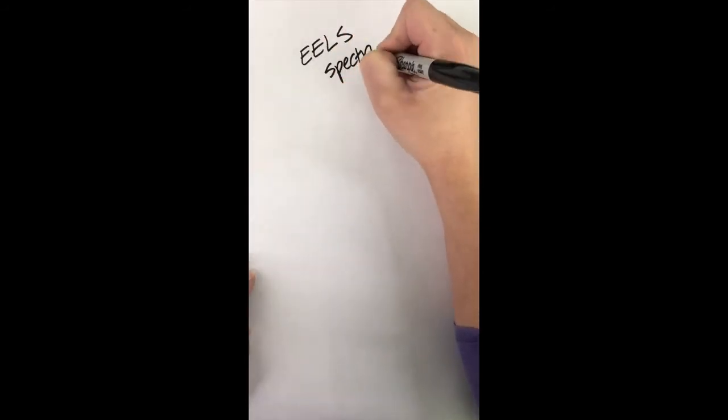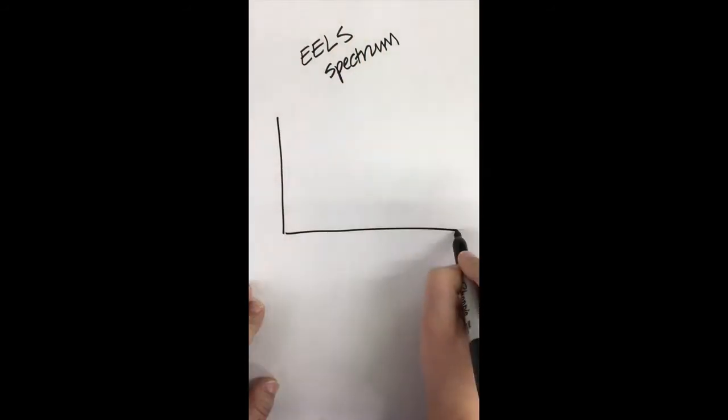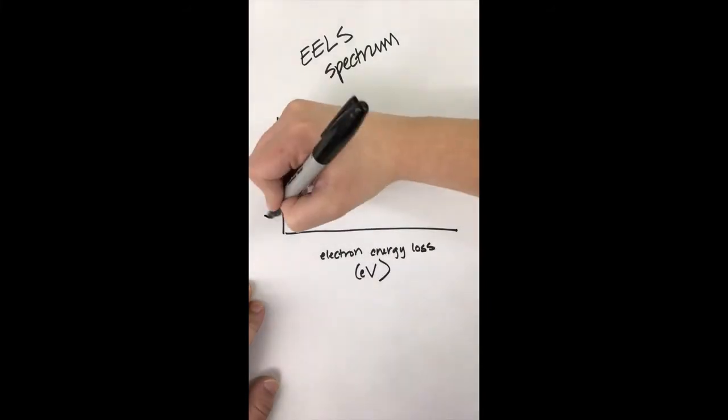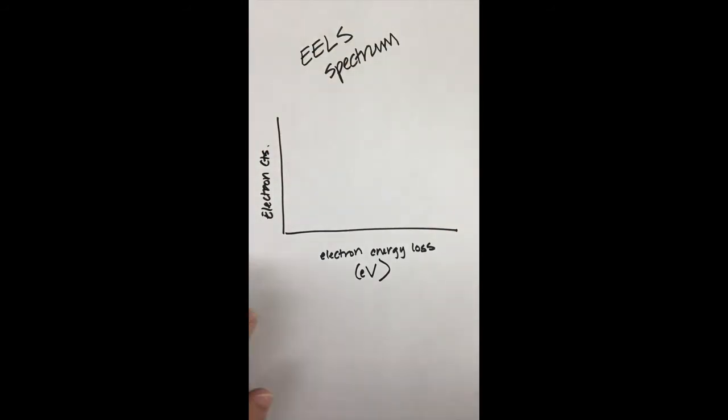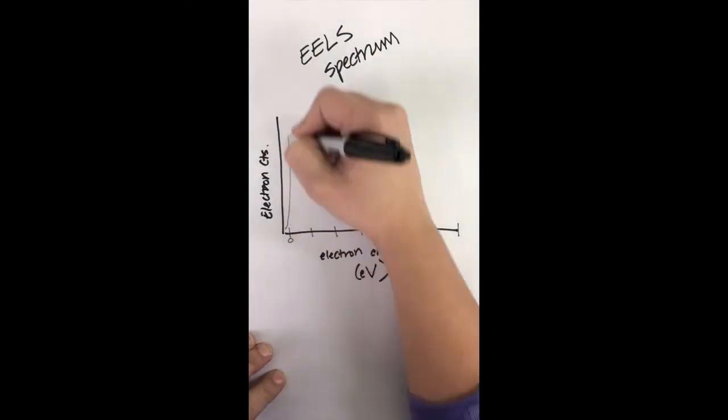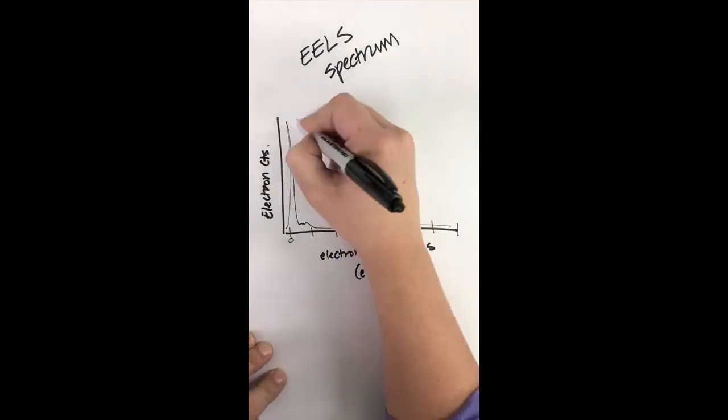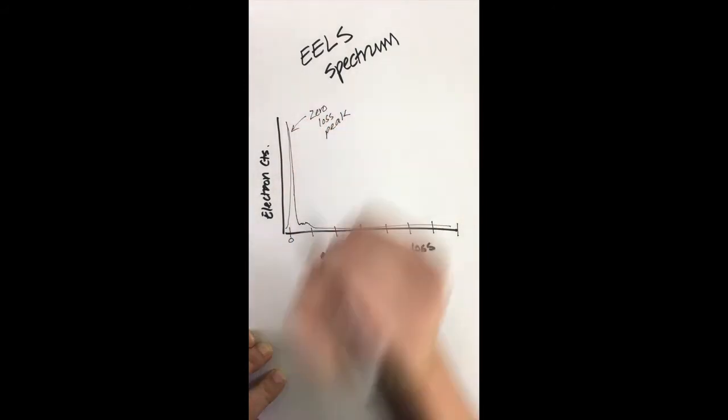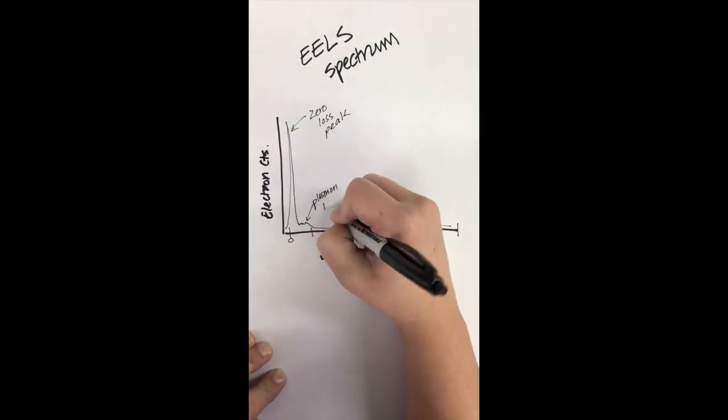The spectrum produced is plotted as a function of the number of electrons or electron counts versus the amount of energy that they lost. This results in a plot of several different components, the first and most importantly being the zero loss peak. This is the peak associated with electrons that lost no energy when moving through the sample, which is the majority of them.